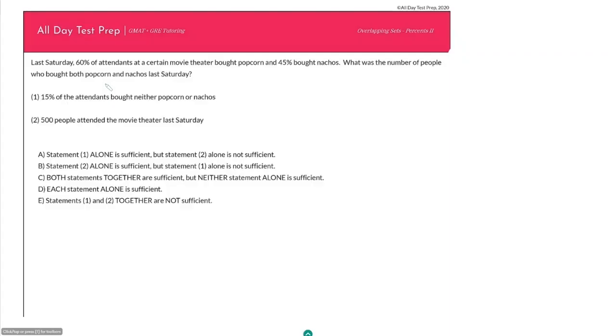All day, now let's do another overlapping set problem involving percents, but this time let's do one that uses both percentages as well as discrete values. Last Saturday 60% of attendance at a certain movie theater bought popcorn and 45% bought nachos. What was the number of people who bought both popcorn and nachos last Saturday?